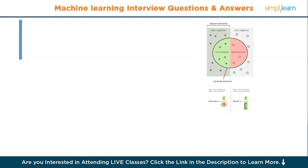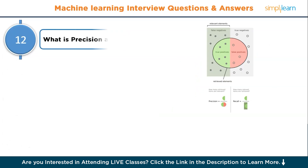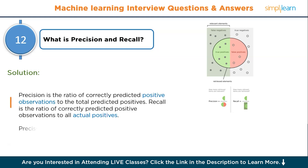Moving to question number twelve: what is precision and recall? Precision is the ratio of correctly predicted positive observations to the total predicted positives. Recall is the ratio of correctly predicted positive observations to all actual positives. The formula is: Precision = TP / (TP + FP), and Recall = TP / (TP + FN).